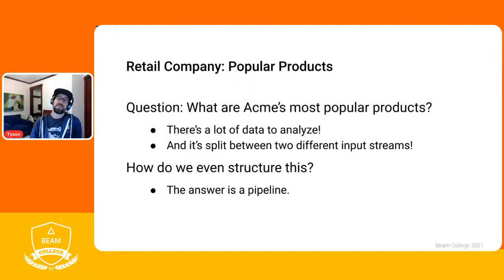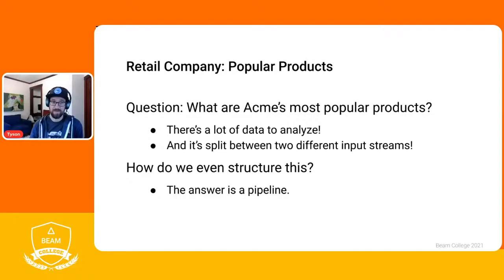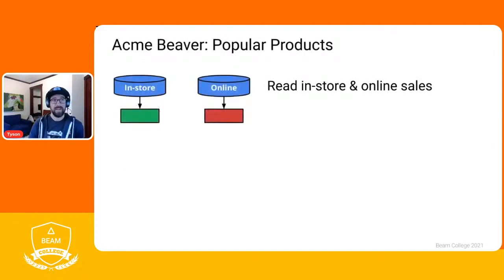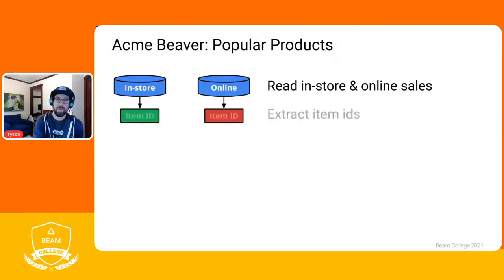Let's walk through a brief example. Suppose you have a company, Acme, and you want to find their popular products. There is potentially a lot of data — maybe Acme is a huge company with tons of sales — and it's split between two different input streams: online sales and in-store sales. We want to figure out the top products, so we're going to use Apache Beam to build a pipeline. We have two inputs: the in-store database and the online database. We're going to use them as sources to our pipeline, which would be P collections.